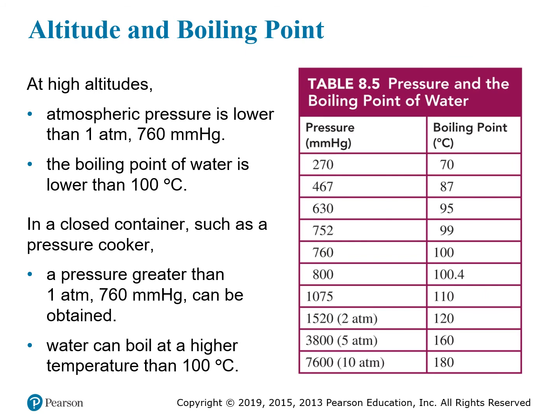The surrounding atmospheric pressure can change the boiling point. At high altitudes, atmospheric pressure is lower than 760 mmHg, so the boiling point of water is less than 100°C — it doesn't need as much energy to overcome the lower atmospheric pressure. For example, if pressure decreases to 752 mmHg, the boiling point decreases. At 270 mmHg, the boiling point of water drops to 70 degrees Celsius.